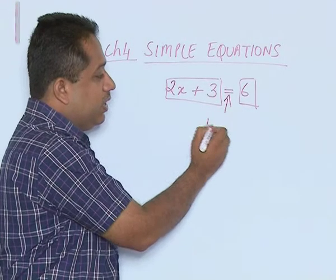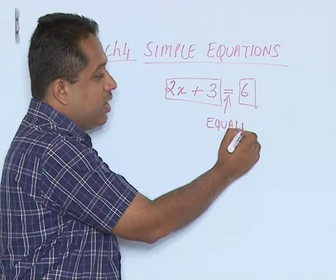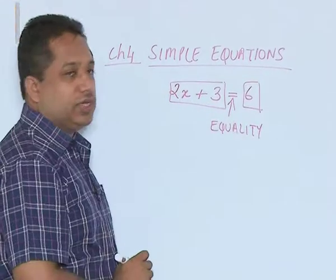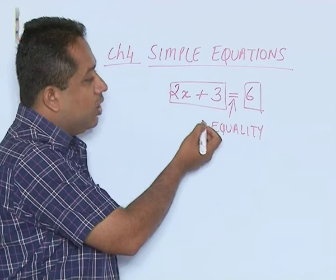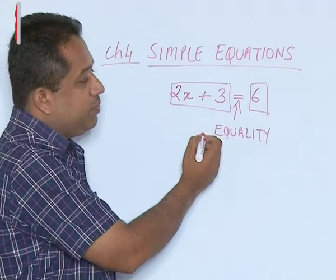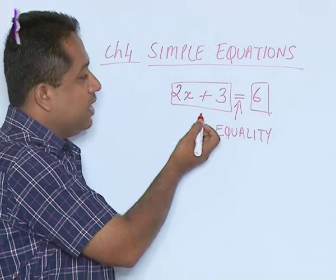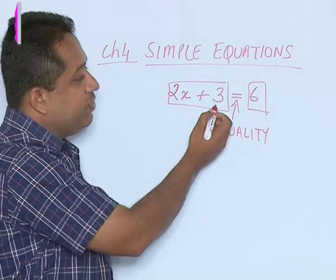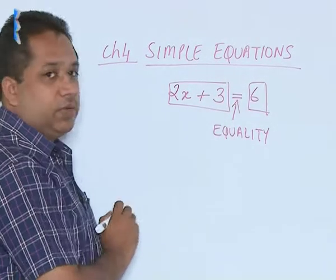So when there is an equality sign between two expressions, one on the left and one on the right, then we say that it is an equation. Now equations can be solved by either trial and error method or there is another method by which we can solve the variable, which is by collecting the common terms, that is the variable on one side and shifting the constant on the other. So let us try out both the examples.